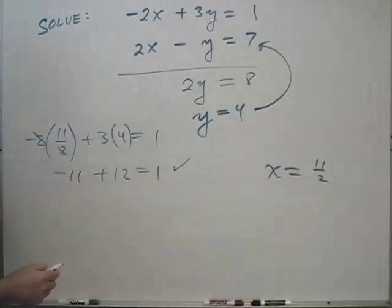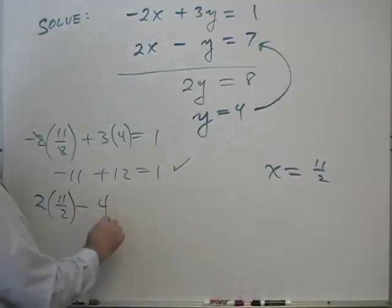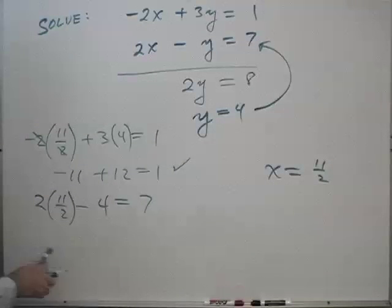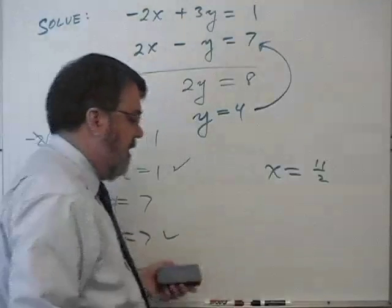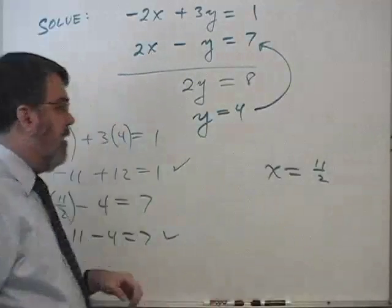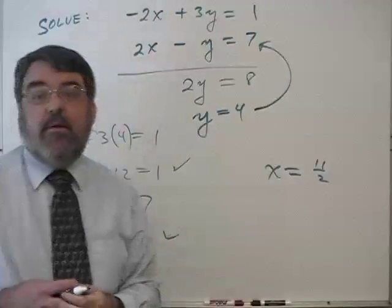And let's verify the second equation. 2 times 11 halves minus 4 should equal 7. And again, we have the 2's cancel. I end up with 11 minus 4 equals 7, and that's also true.